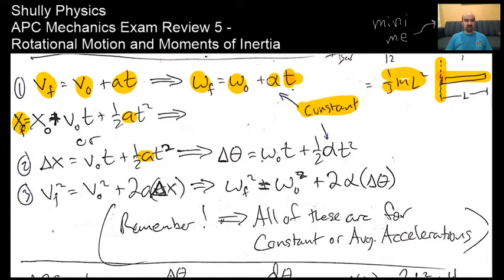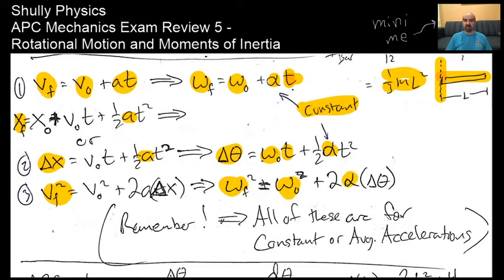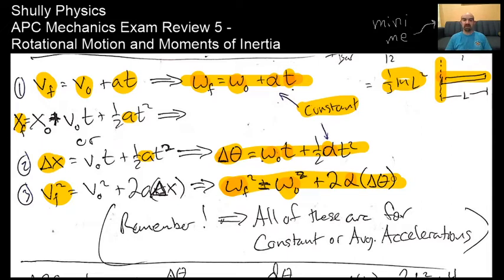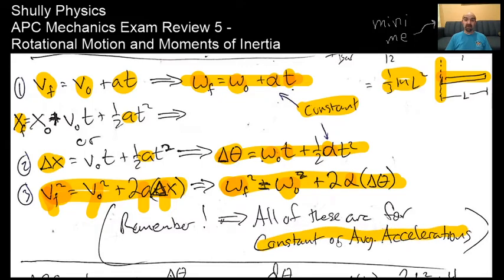We also have delta x equals V₀t plus one-half at squared, which translates to: change in angular position equals initial angular velocity times time plus one-half alpha t squared. Our third equation has its own form. Equations one and two are on the AP Physics equation sheet; the third one is not. If you ever need it, just look back at the translational form and interpret it in your head: omega final squared equals omega initial squared plus two alpha delta theta. Remember, all of these are for constant or average angular accelerations.